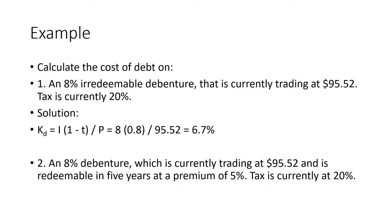Example two: an 8% debenture which is currently trading at 95.52 and is redeemable in five years at a premium of 5%. Tax is currently 20%. We will calculate the cost of this redeemable debt using the IRR method.